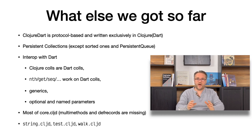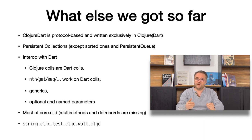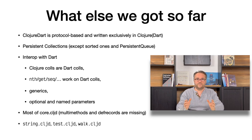Besides the compiler, we have an 80% complete Closure implementation. Some things are lacking like sorted collections or multi-methods. Otherwise, we have most of core, some auxiliary namespaces, and good interop with Dart. All Closure collections are Dart collections and Dart collections can be passed to Closure functions. We support generics, which is important because in Dart generics are not erased like in Java. We also support named parameters. Interop was really important to us — it's even the first thing that we prototyped, because one of the pillars of Closure is its interop capacity with the host.